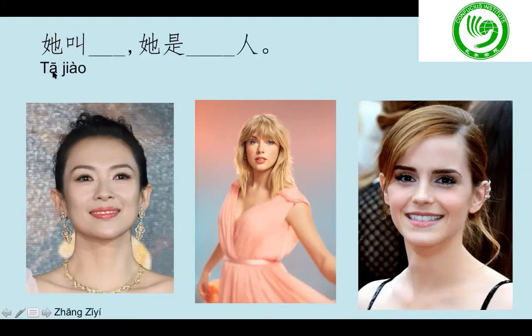Now let us continue. Then give me a full sentence. You can say 她叫 - 'her name is' - then she is. For example, 张子怡: 她叫张子怡, her name is 张子怡. 她是中国人. Then continue with the second one. 她叫 - you start please. Last picture.